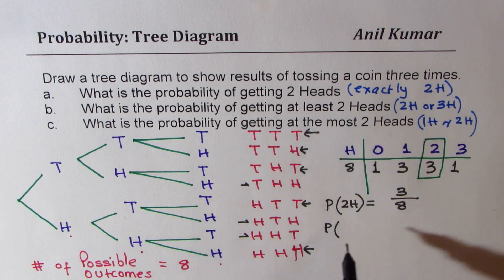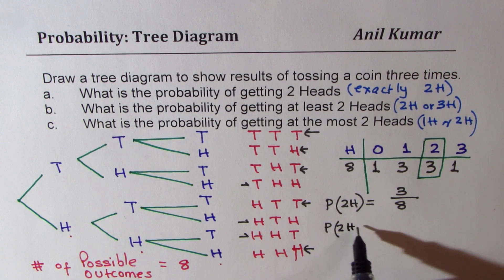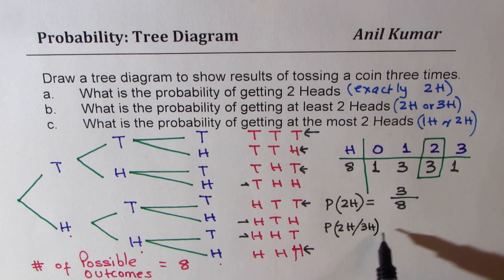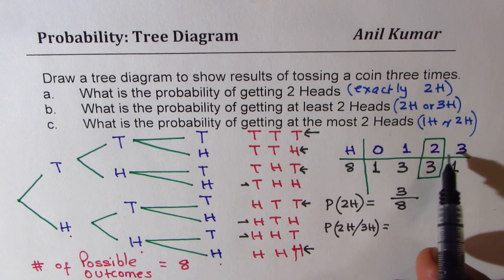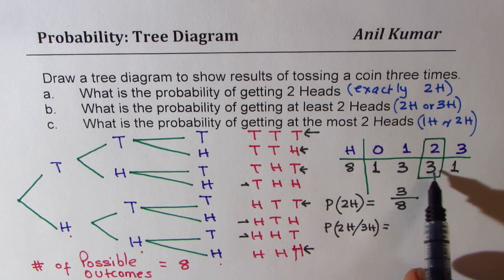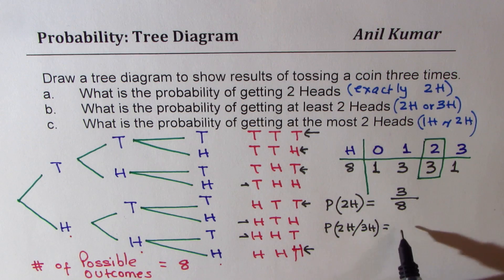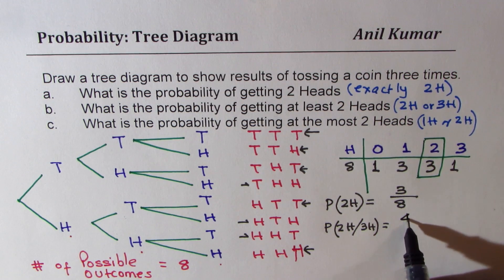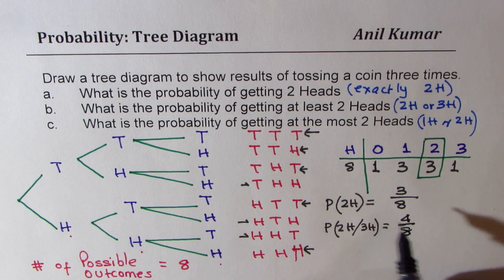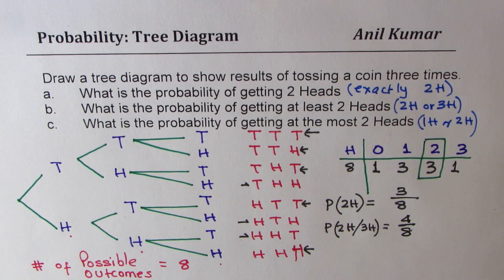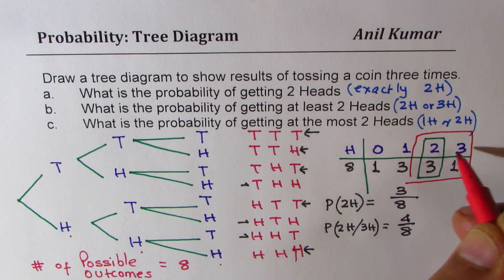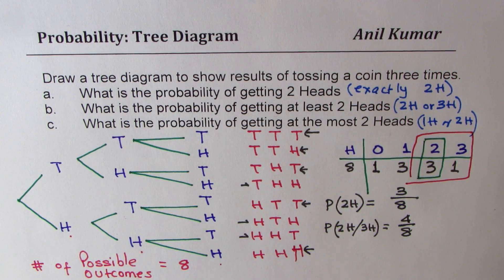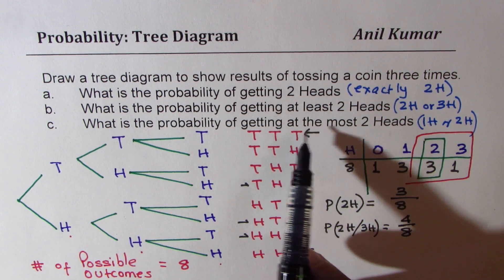For Part B, the probability of getting at least two heads means either we get two heads or we get three heads. So we combine these two cases: three plus one is four. We get four out of a total of eight. Do you see that — we combine two or three heads?